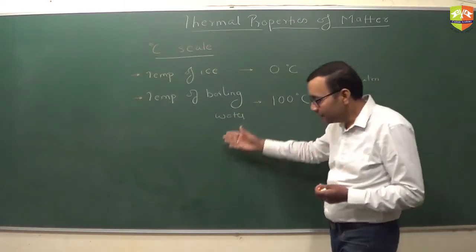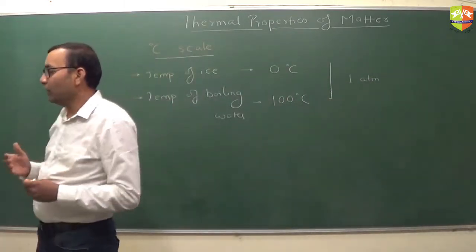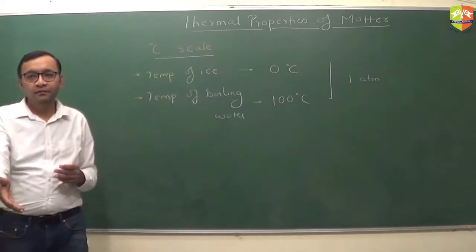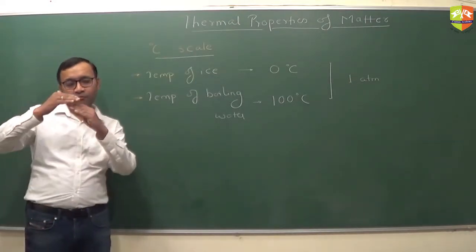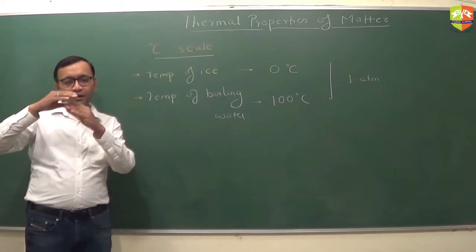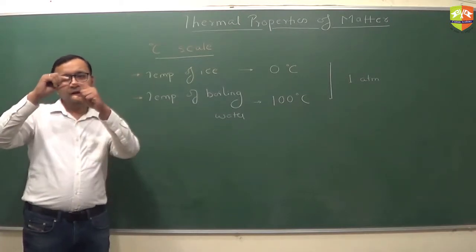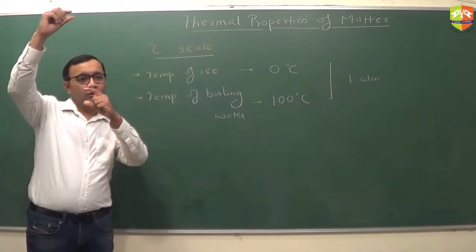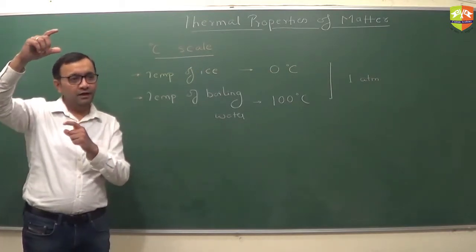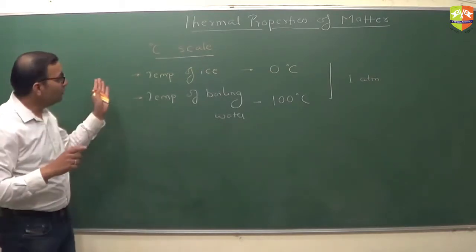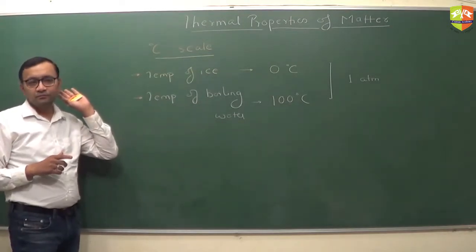If I have defined a scale like this, can you get an idea of what 150 is? You just move one step — whatever you have defined, you know exactly what one unit is. After 100, you just add 50 more and you get 150. That's how the Celsius scale is defined.